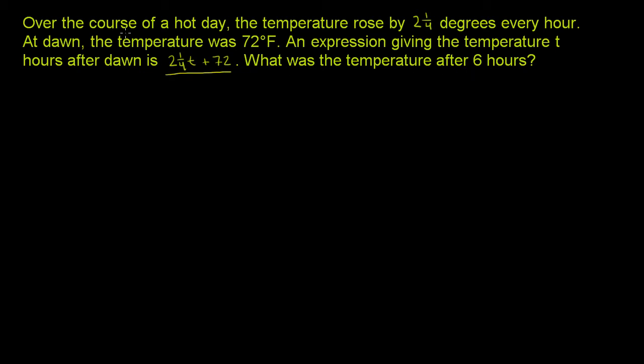So essentially, they summarize this information in the first two sentences. The temperature rises by 2¼ degrees every hour. That's this part of the statement right over here. At dawn, the temperature was 72 degrees, so you're starting at 72. So they're summarizing this equation right here.